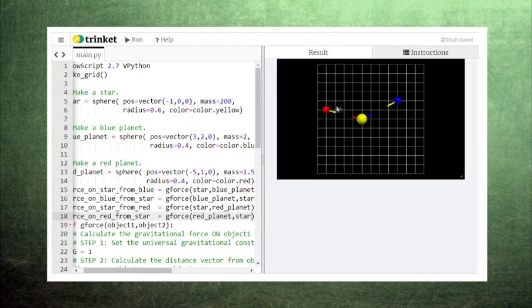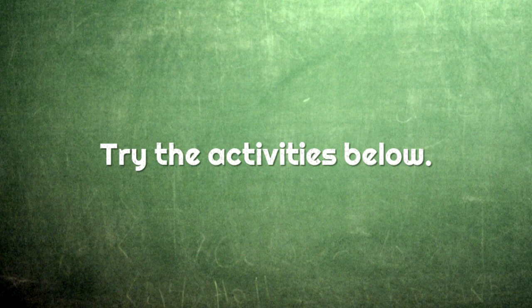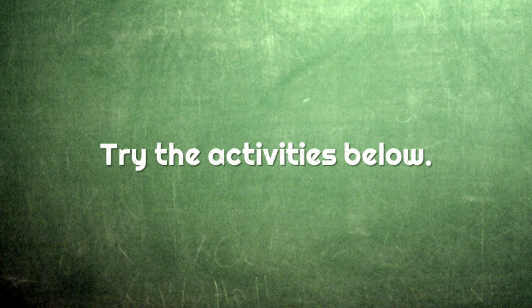This diagram also shows us that we are missing a pair of forces. We don't have any arrows pointing between the blue planet and the red planet. The activities at the link in the description below will walk you through the process of adding these forces, and learn about how gravity works.